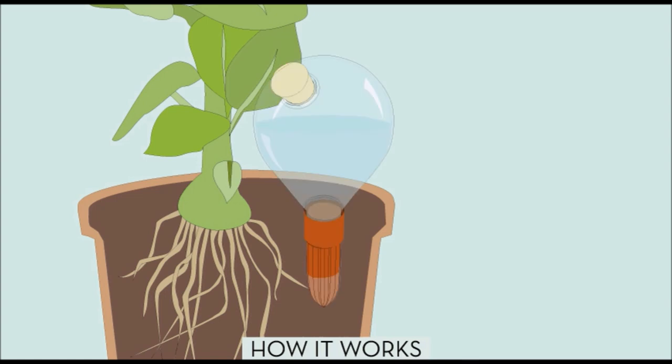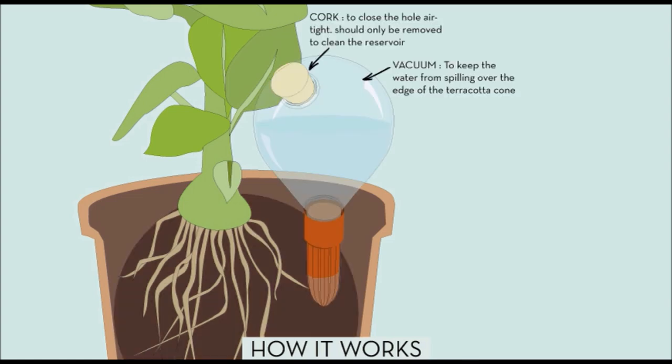Let's see how it works. We have a cork, closing the reservoir air tight. It's the most important part because it creates a vacuum that keeps the water from spilling over the edges of the terracotta cone.